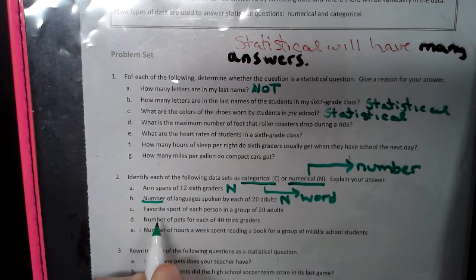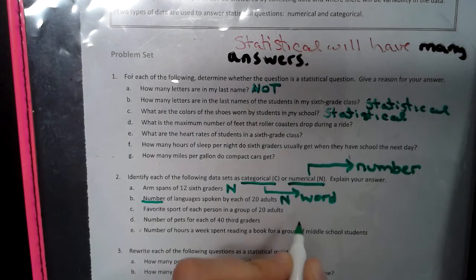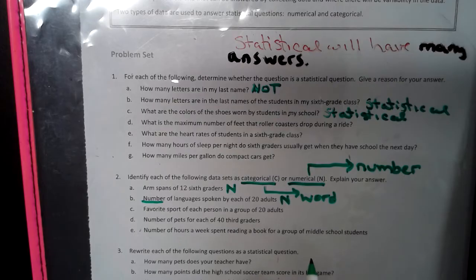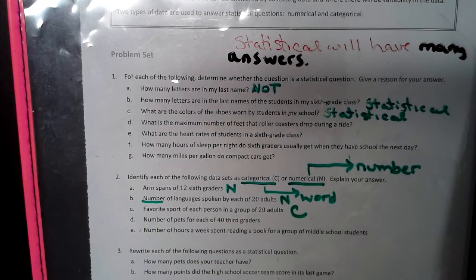Whereas if we look at the next one, it says favorite sports of each person in a group of 20 adults. A favorite sport isn't going to be a number. Favorite sport is going to be a word. So that would be categorical.